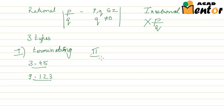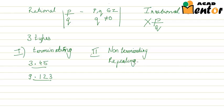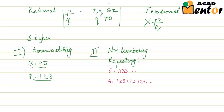The second type is non-terminating but repeating decimal numbers. Examples of these would be 6.333... and so on. Even the number 4.123123... and so on is an example of non-terminating but repeating numbers.